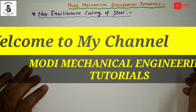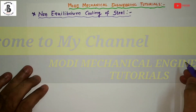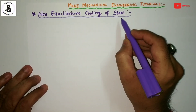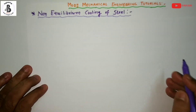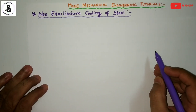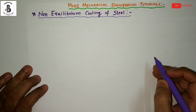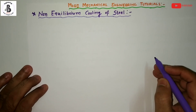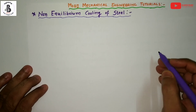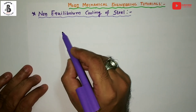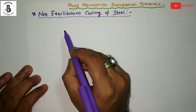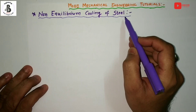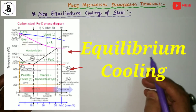Welcome to Modi Mechanical Engineering Tutorials. In this video, I would like to explain non-equilibrium cooling of steels. We already discussed the basics of the heat treatment process, which has three stages: first heating, then soaking or holding, and then cooling. This theory is related to the final stage of heat treatment, which is the non-equilibrium cooling of steels.